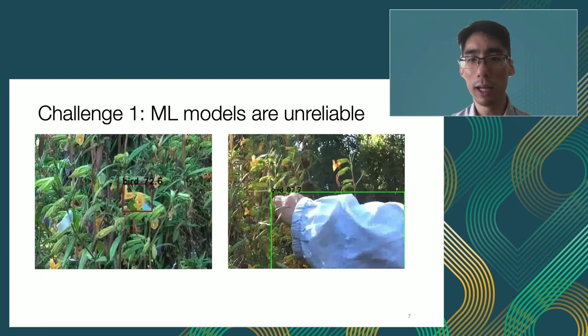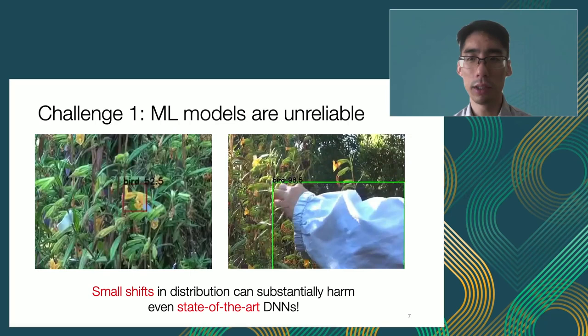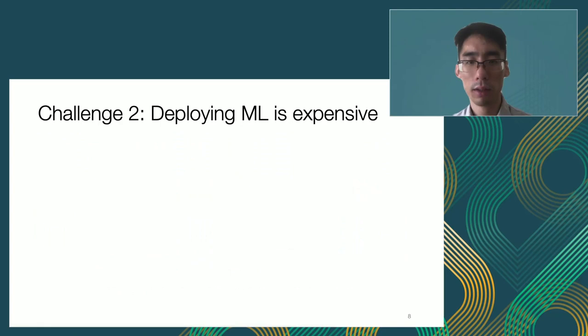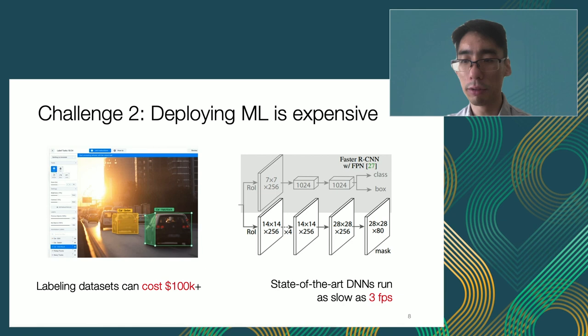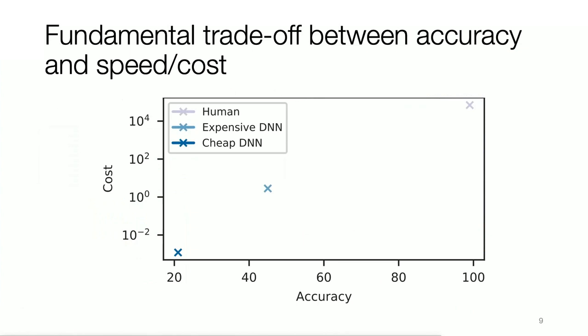Small shifts in distribution can substantially harm the performance of even state-of-the-art deep neural networks. The second challenge is that deploying machine learning is expensive. Labeling datasets can cost hundreds of thousands of dollars, and state-of-the-art neural networks can execute as slow as 3 frames per second when analyzing video. There's a fundamental trade-off between accuracy and speed or cost, with huge differences in costs ranging orders of magnitude.